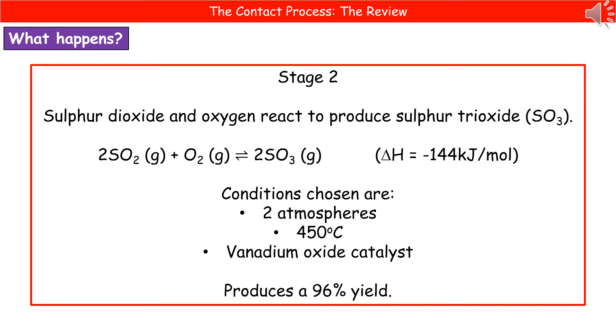Stage two is where sulfur dioxide and oxygen react to produce sulfur trioxide. As the name suggests, there's three oxygens joined onto a sulfur, hence trioxide. We start off with two molecules of sulfur dioxide plus oxygen and we're going to make two molecules of sulfur trioxide. The key thing to remember here is that this part is a reversible reaction. Make sure you draw it with the reversible reaction sign.